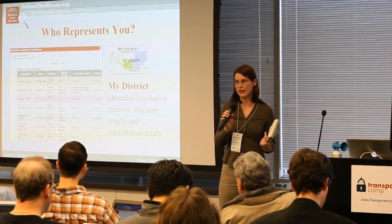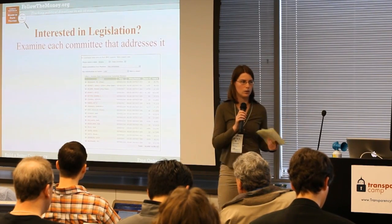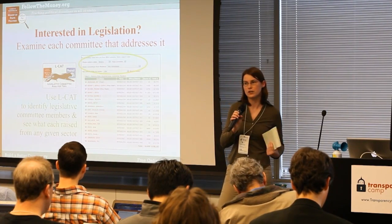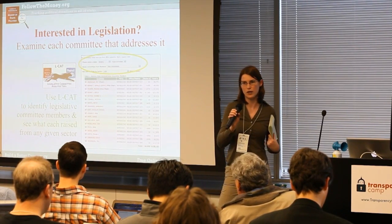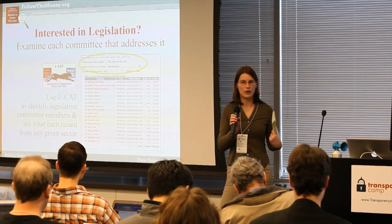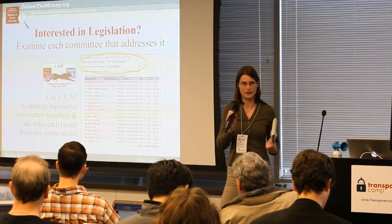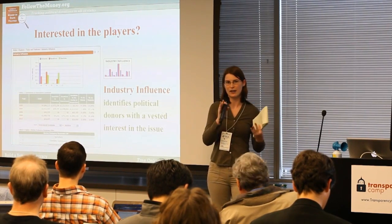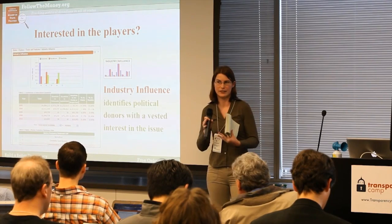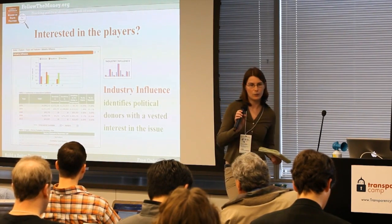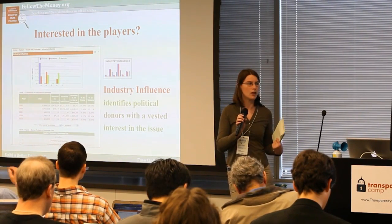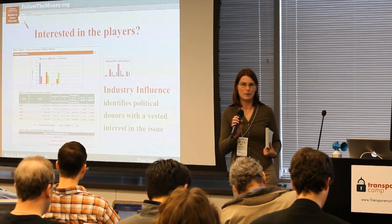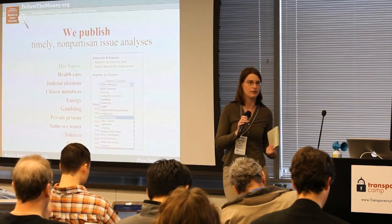You can also click on candidates' names and delve even deeper into that individual person. We also have the LCAT tool, which combines our API with Project Vote Smart's APIs, and we compile lists of all the committee members at the state level. You can look at, say, the Agriculture Committee and what the agriculture industry has given to that committee. And then we have our Industry Influence tool, which allows you to look at different industries, see what they've given over time, and look at which parties they've given to.